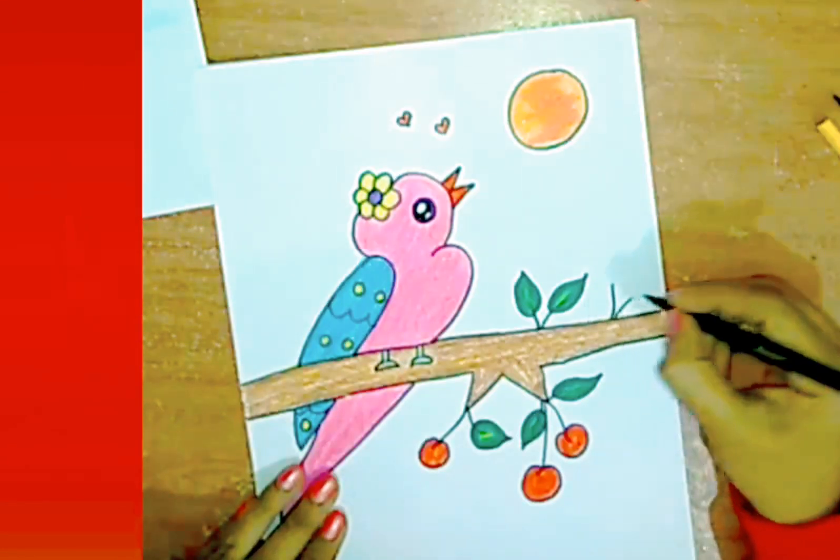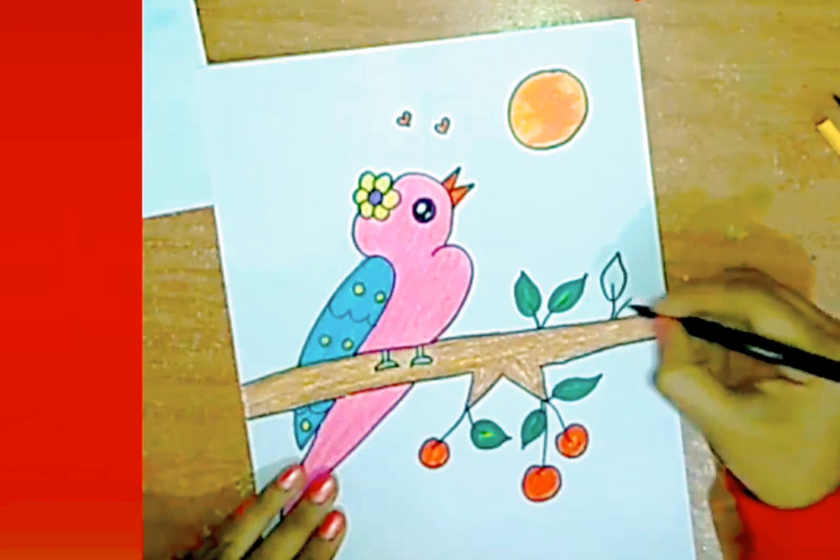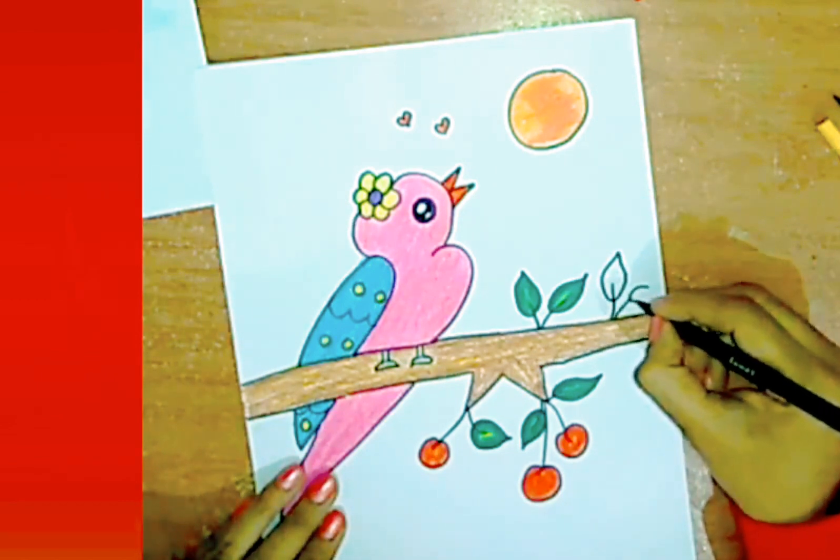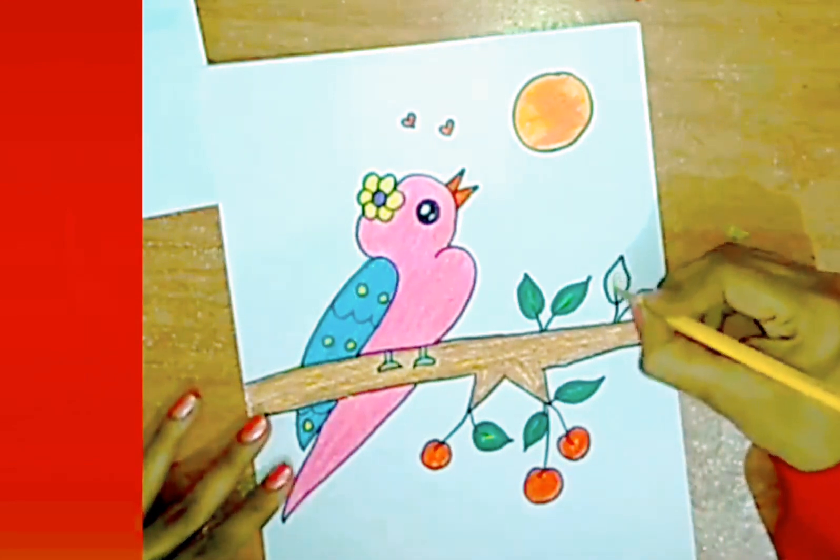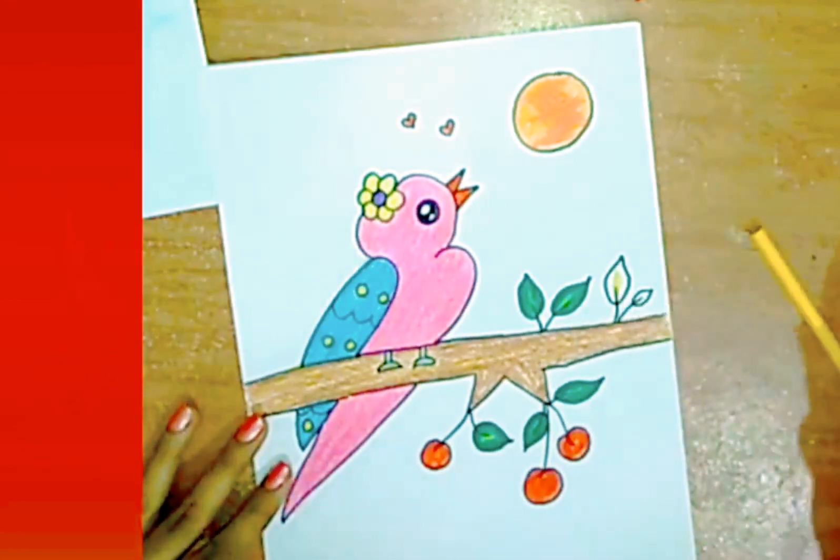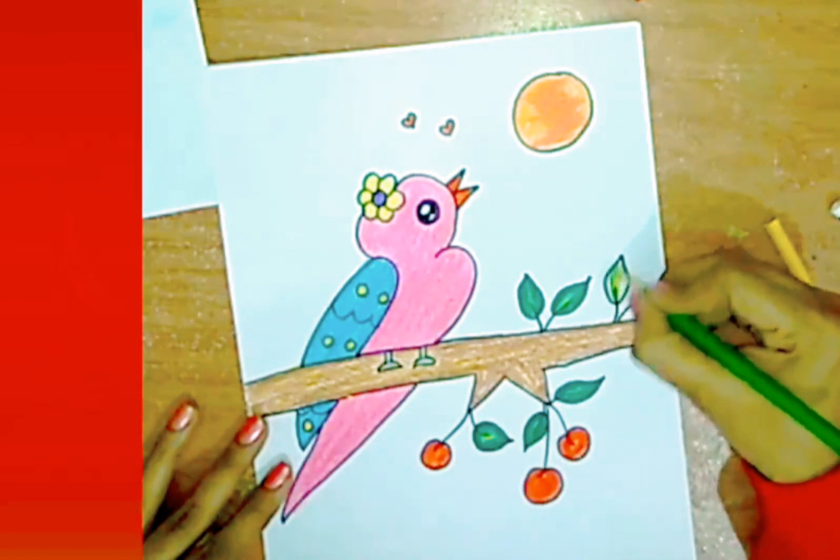Color the sun with red and orange. Now color the leaves with yellow, light green, and dark green shade. First add some little yellow, then light green, then dark green.